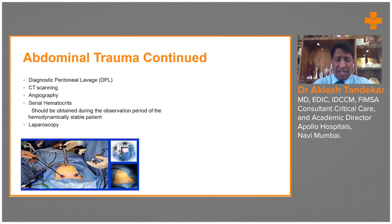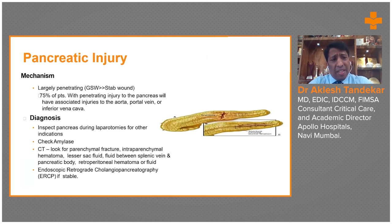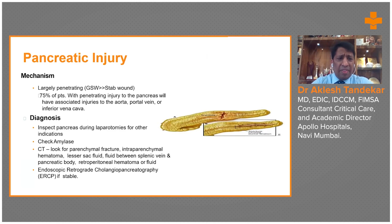If the patient is hemodynamically stable, preemptive angiography and identification of the bleeding vessel is very important. Hemostatic agents can be used — tranexamic acid is recommended nowadays. Laparoscopic minimally invasive interventions should be advocated as far as possible. For patients with pancreatic injuries, the mechanism is largely penetrating injury in 75% of cases, and they may have associated injuries to the aorta, portal vein, or inferior vena cava.